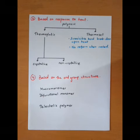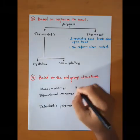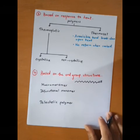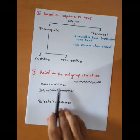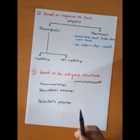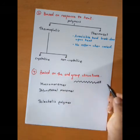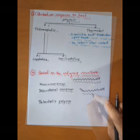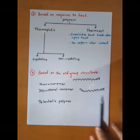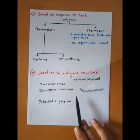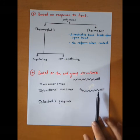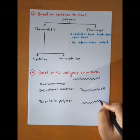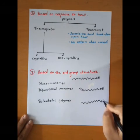Rubber can be categorized as thermoplastic or thermoset depending on its properties. The next classification is based on end group — the functional group at the end of the polymer chain. Based on end group, we have macromonomers with one functional group, difunctional monomers with two functional groups, and trifunctional monomers. A telechelic polymer is a difunctional polymer where both ends have the same end group, for example an OH group at both ends.